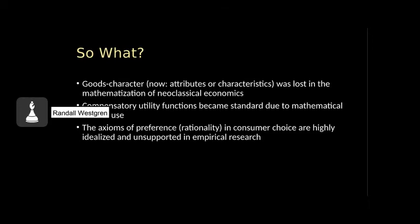The wave of development of neoclassical economics — with its univariate utility, mathematization of the utility function, and analytics — swept aside the Mengerian approach to economics by about 1910. We lost the goods character. We lost the non-compensatory nature of hierarchical wants. And those were replaced with a series of axioms of preference, the so-called axioms of rationality, that are highly idealized and often unsupportable in empirical research.